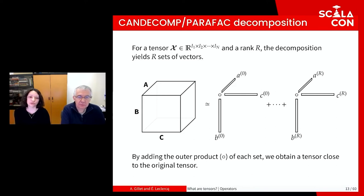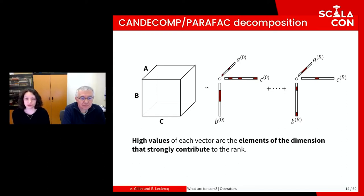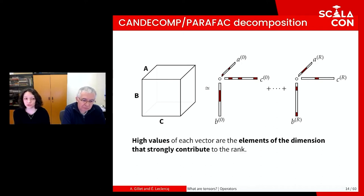The outer product takes two tensors as input and produces a tensor whose order is the sum of the orders of the input tensors. For example, the outer product of two vectors produces a matrix. The strength of decomposition comes from its capability to give a result that takes all dimensions into consideration simultaneously. To interpret the CANDECOMP-PARAFAC decomposition, we look at the values in each vector — the higher ones contribute the most to the rank. A rank represents a signal in the tensor. A signal gains in intensity when many elements of a dimension have similar behavior in other dimensions, or when a particular element has high values and stands out.